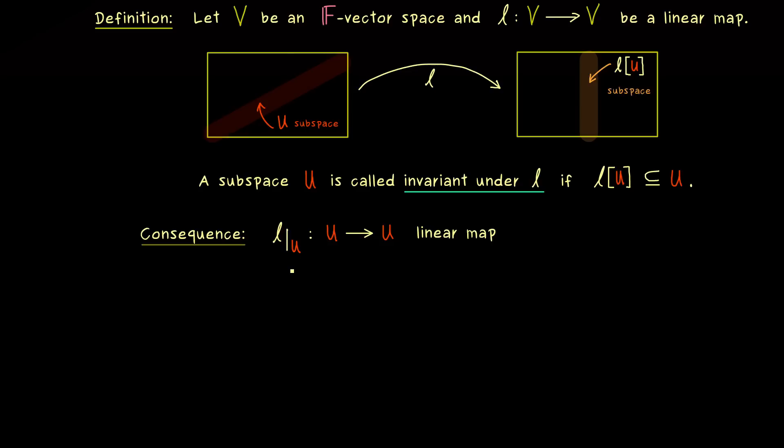There you could say this linear map sends the vector space U into itself. So you see, an invariant subspace allows us to analyze our linear map inside this given subspace. And exactly this is what we can use when we want to decompose a matrix into so-called Jordan blocks. Hence, this will be our important application of these invariant subspaces.